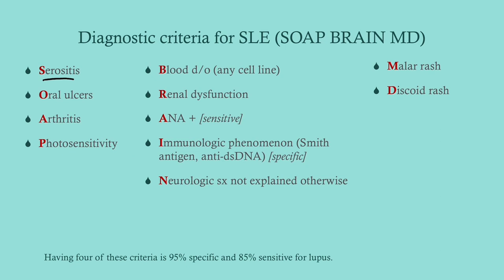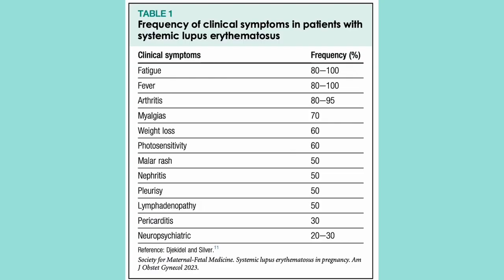ANA will be part of our orders — it's a very sensitive test but not very specific. For immunologic phenomena, look for anti-Smith antigen and anti-dsDNA; these are specific but not quite as sensitive. Neurologic symptoms not otherwise explained, malar rash, and discoid rash are also criteria. Remember that SLE is a syndrome — you're never going to have all of the signs. You may have a few or many of them depending on your presentation, so look for the constellation you're dealing with.